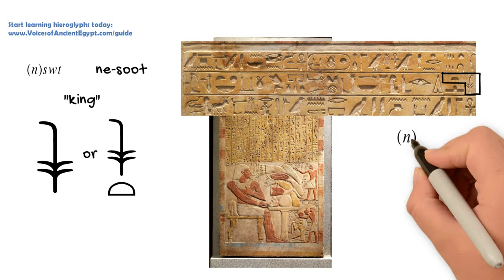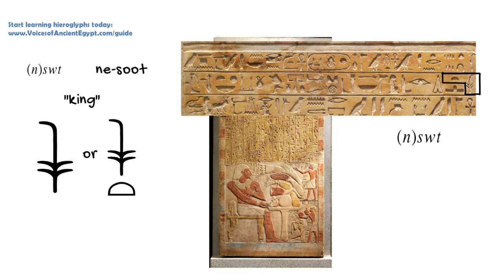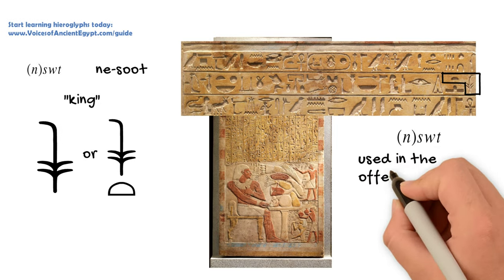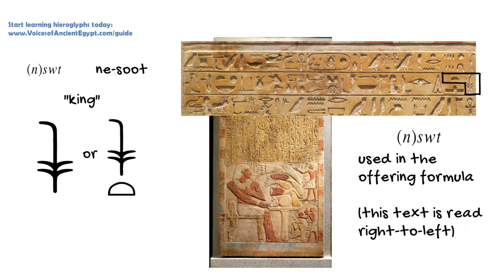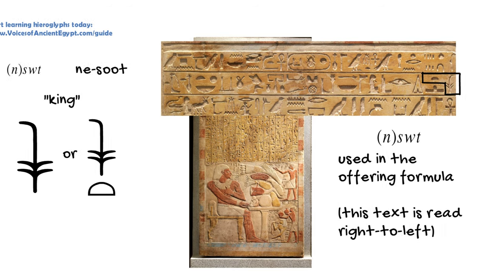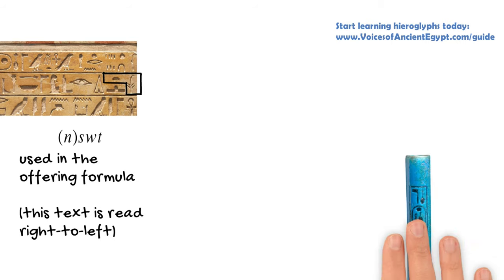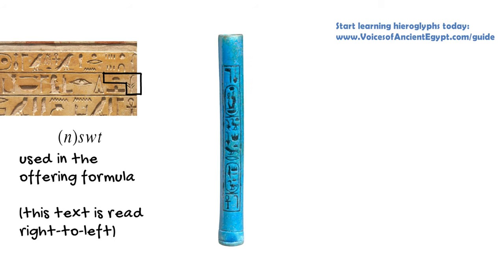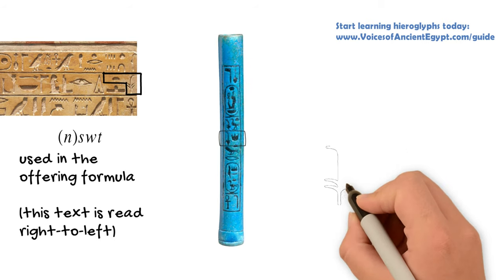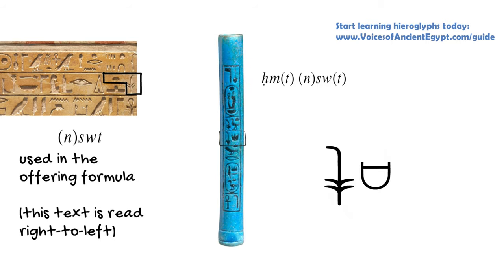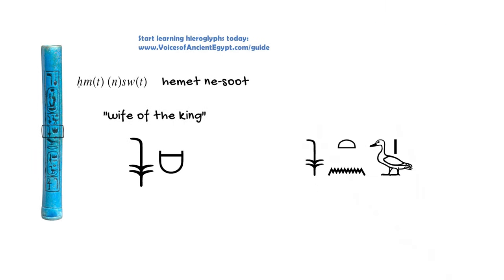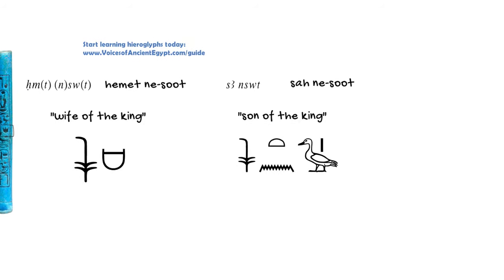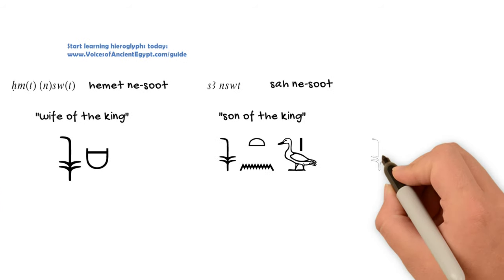Because it was used in this more general way, it's the most common, most flexible word we see used for king. For example, when talking about family members of the king, this is the term that's used. So the wife of the king is the 'hamet nesut,' the son of the king is the 'za nesut,' and so forth. It's also the term used when talking about royal decrees: a 'wedge nesut.'